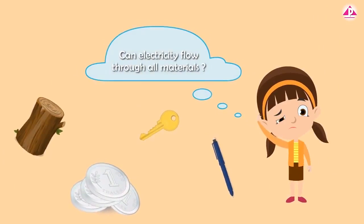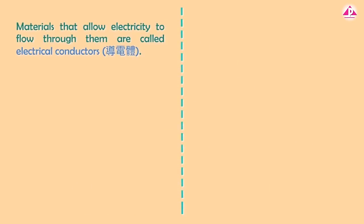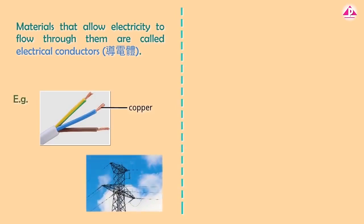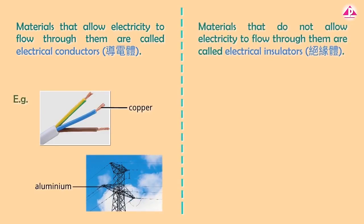Can electricity flow through all materials? Materials that allow electricity to flow through them are called electrical conductors. Materials that do not allow electricity to flow through them are called electrical insulators.